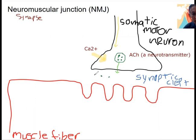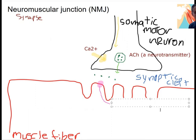We've got neurotransmitter in the synaptic cleft — what's that going to do? It's going to bind to receptors on the postsynaptic membrane, which in this case is the muscle fiber. This is an acetylcholine receptor, and more specifically it's called a nicotinic receptor. What this means is that it also binds nicotine. There's going to be another kind of ACH receptor we'll see with the autonomic nervous system.